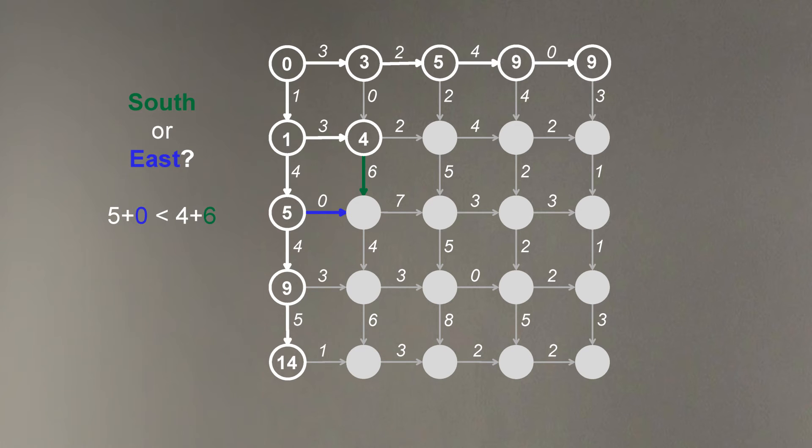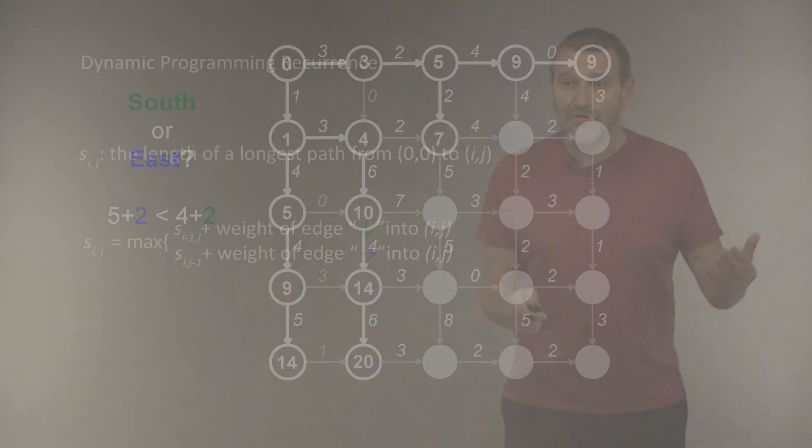How about this edge? The same argument, and we decide to move to this node by using a vertical edge in this case. And we will continue further and further. Let's just try one more time. What about this node? How should we arrive to this node? In this case, we compare 4 plus 2 with 5 plus 2. 5 plus 2 is larger than 4 plus 2. And therefore, we choose to arrive to this node by moving along a vertical edge.